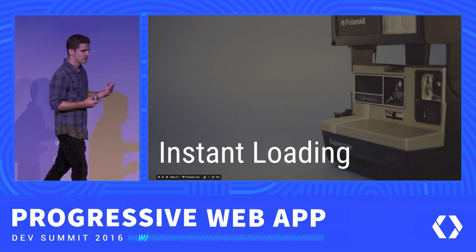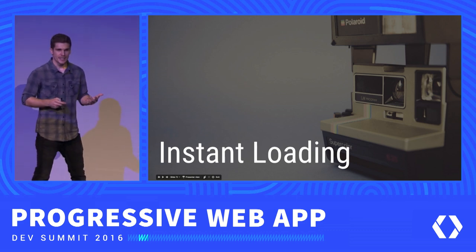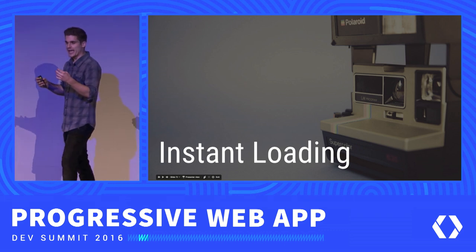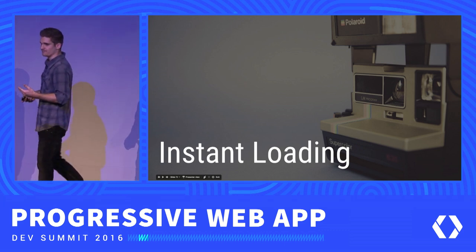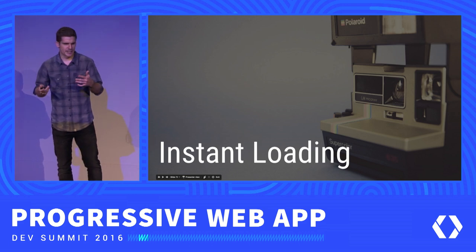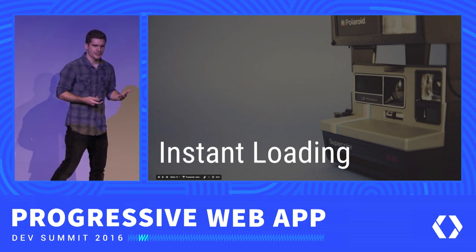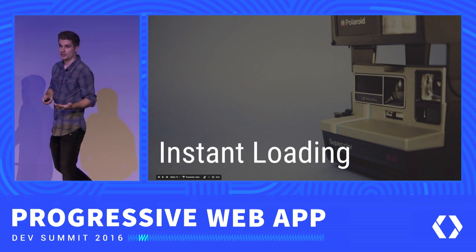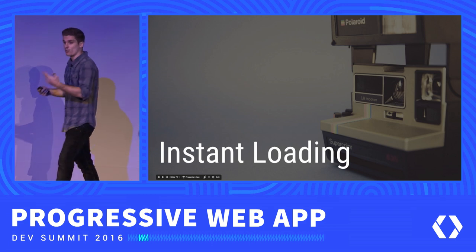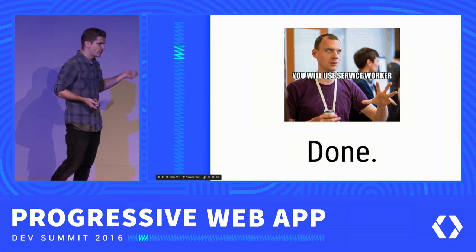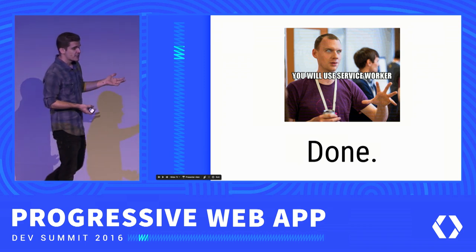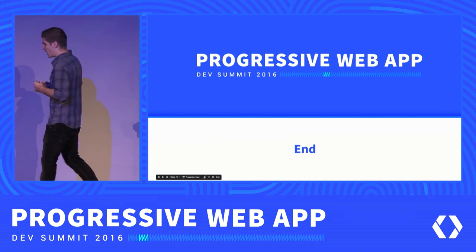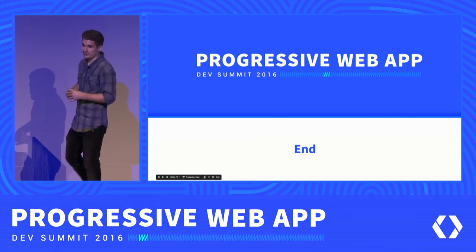Instant loading — you probably know the experience. You have something on the home screen of your phone, you tap that icon, and you expect the app to be there instantly, to open up and be ready for you to work with. There shouldn't be any white screens or spinners. The app should be there right away. You can achieve that with your web apps: take a service worker, slam it onto your web app, make it cache everything offline, and enjoy your instantly loading app.